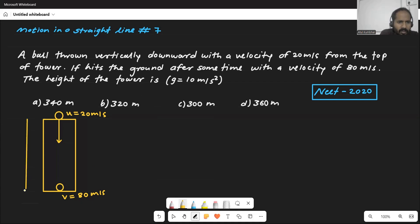So they are asking us to find out that height. That's the displacement and we need to take g as 10. Very simple: u given, v given, height find out, g given. We will use the third equation directly.